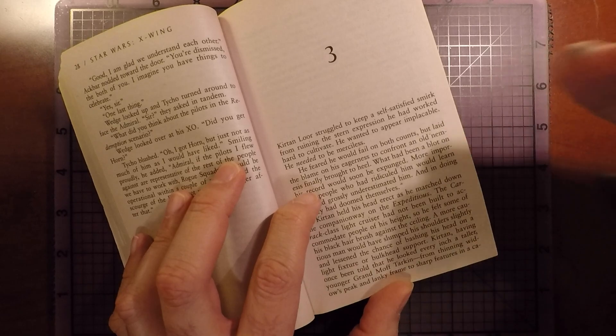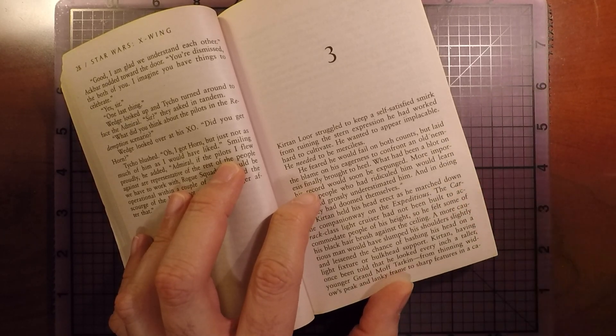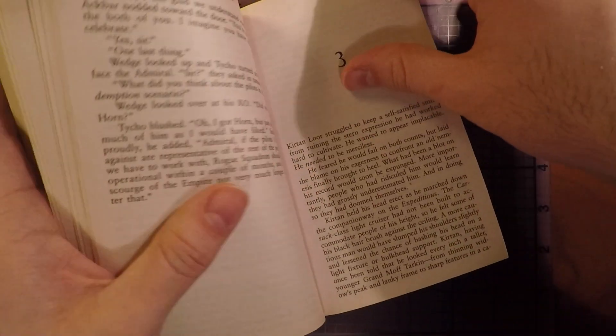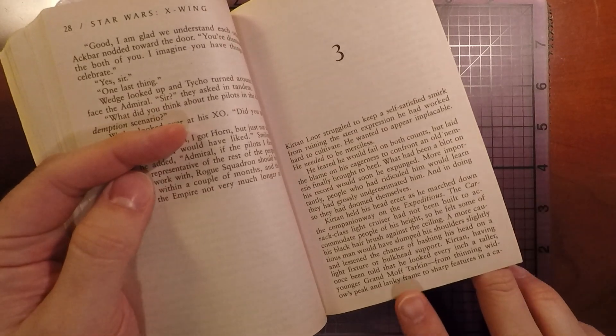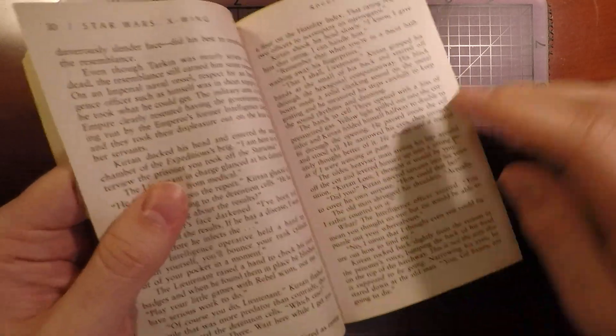So, he's basically risking bumping his head on bulkheads and stuff as he's walking. So he's a proud son of a gun. He compares himself mentally to Moff Tarkin, who was the villain from the first Star Wars movie.